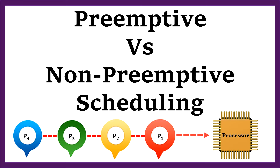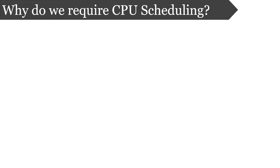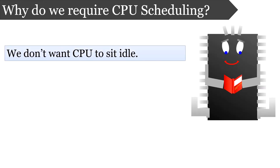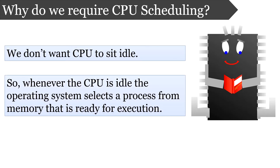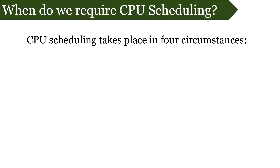Before getting into the details of what primitive and non-primitive scheduling is, let us discuss why there is a need for scheduling. We don't want our CPU to sit idle — instead it must be processing something continuously in order to achieve efficient CPU utilization. Whenever a CPU is idle, the operating system must select a process from the ready queue that is ready for execution and allocate a CPU cycle to that process. This task of selecting a process from the ready queue is done by the CPU scheduler.